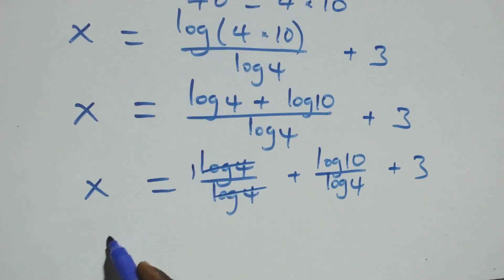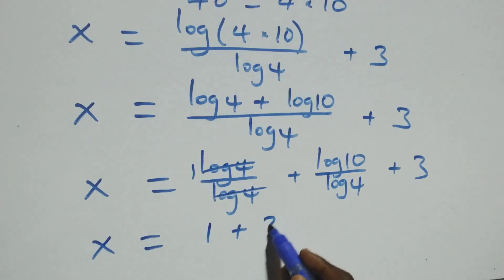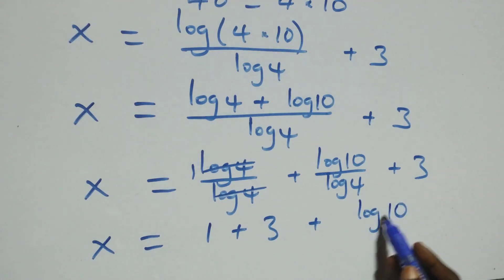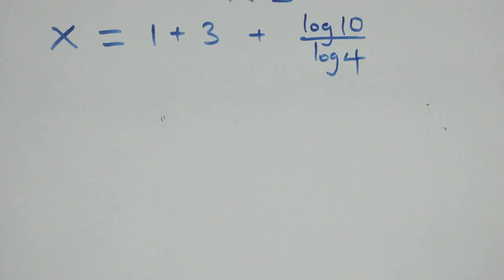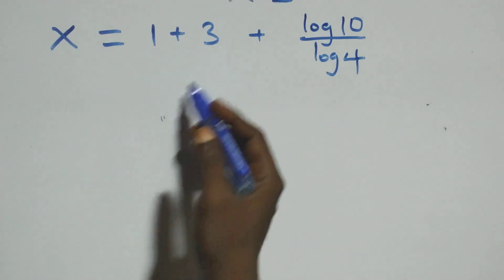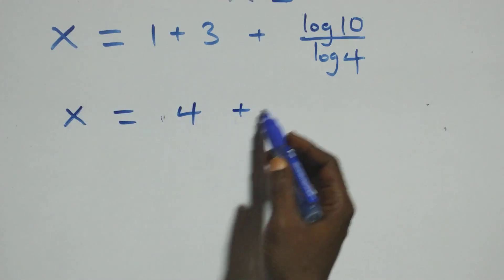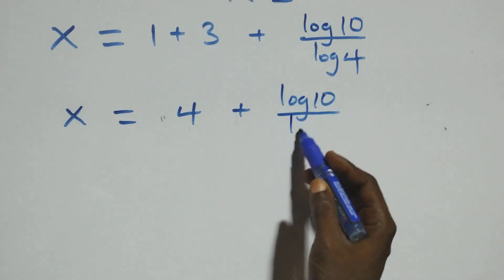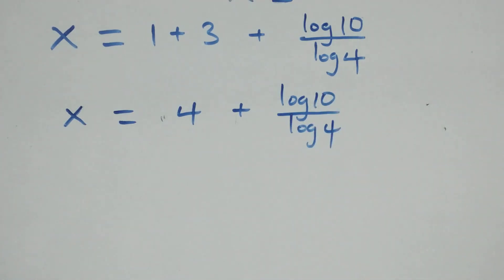We have 1 left, which implies x equals 1 plus 3 plus log 10 over log 4. Here we have 1 plus 3, that's 4, so x equals 4 plus log 10 over log 4.